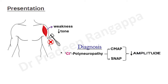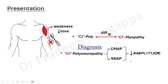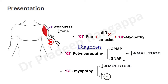In critical illness polyneuropathy, compound muscle action potential and sensory nerve action potential show a reduction in amplitude. It is very difficult to differentiate between pure critical illness polyneuropathy and critical illness myopathy, as there is some overlap and they tend to co-exist. In critical illness myopathy, there is reduction in amplitude and an increase in the duration of the action potentials. Recovery in critical illness myopathy is better — as opposed to critical illness polyneuropathy — and recovery can take up to 6 to 12 months.